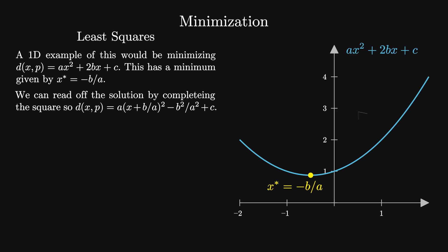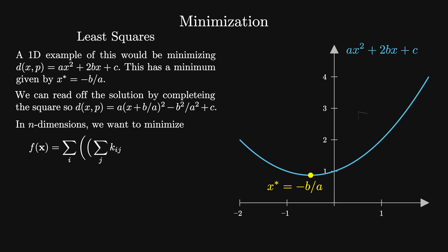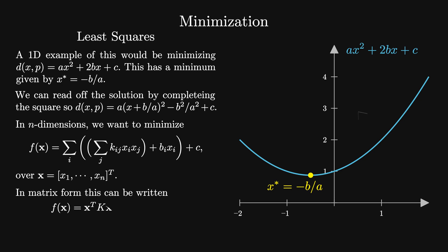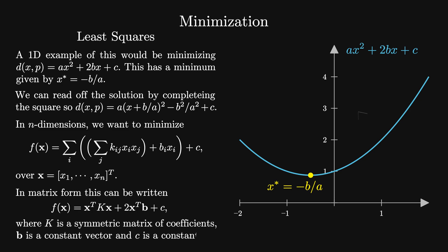We can just read off the minimal solution by setting x plus b over a equal to zero. We can generalize this now to n dimensions. Here we want to minimize the function f equal to the sum on i of the sum on j of k_ij x_i x_j plus b_i x_i, all plus c, over the vector x. In matrix form, this is written as f(x) equals x^T K x plus 2x^T b plus c, where K is a symmetric matrix of coefficients, b is a constant vector, and c is a constant.